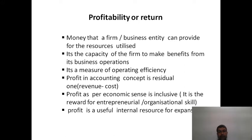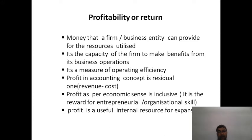Akash scored 60 marks in a subject, Balram also scored 60 marks, and Chandr Shekar also scored 60 marks. Put together, all three students are equal scorers, so we cannot determine who is better — they are all equal. This is like looking at absolute profit: without additional information, we cannot draw a useful conclusion.